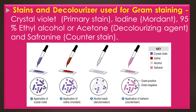The gram staining is still the cornerstone of bacterial identification and taxonomic division. Gram positive bacteria resist decolorization due to the thick cell wall peptidoglycan and appears violet in color due to the primary stain, crystal violet.